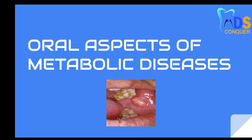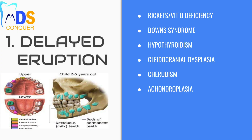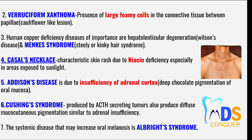Hi everyone, today we are going to discuss 32 important points from the topic oral aspects of metabolic diseases. These are important from an exam point of view. Point number one: delayed eruption is seen in the following conditions — rickets or vitamin D deficiency, Down syndrome, hypothyroidism, cleidocranial dysplasia, cherubism, and achondroplasia.